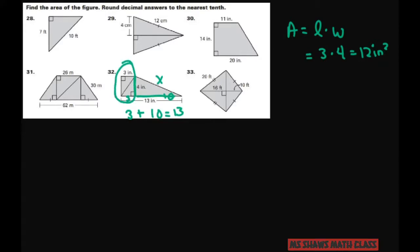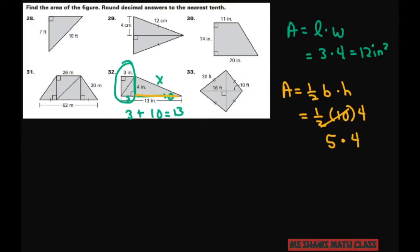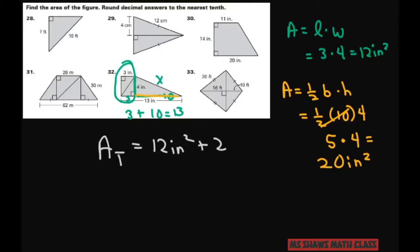Now for the triangle portion: the area is one half base times height. The base is 10 and the height is 4, so one half of 10 is 5, and 5 times 4 equals 20 square inches. To get the total area, add 12 square inches plus 20 square inches, which equals 32 square inches.